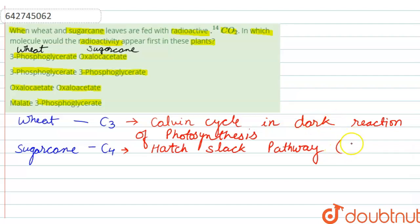Now, the products formed in C3 and C4 plants are different. When we talk about C3 plants, the first product is 3-phosphoglycerate. This is the product of photosynthesis in C3 plants.